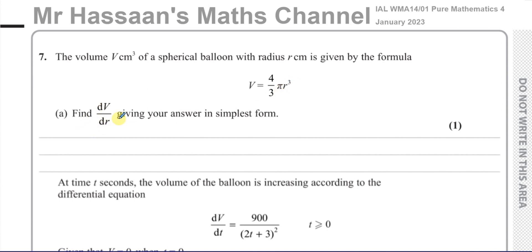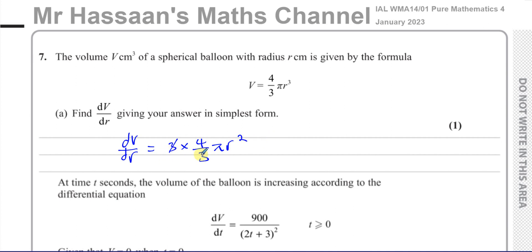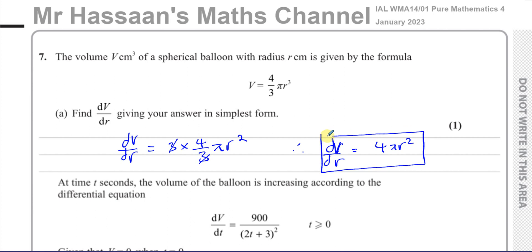We've got to first find dV/dR, giving the answer in simplest form. So we have to differentiate this expression with respect to R. dV/dR is equal to — we multiply by the power, so it's 3 times 4 over 3 times pi, and from R we take 1 from the power, giving R squared. The 3 cancels with the 3, so dV/dR equals 4πR². That's the answer to part 1 — one mark, simple differentiation.